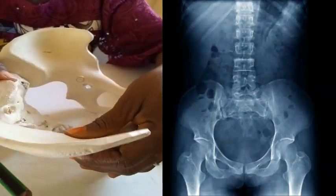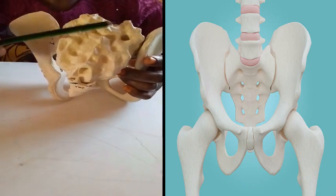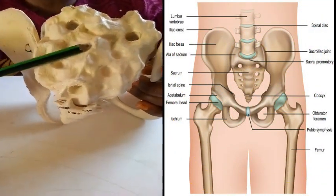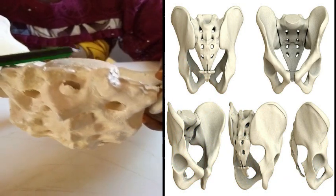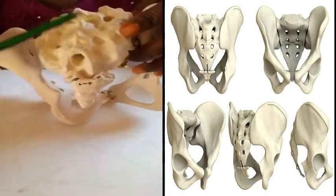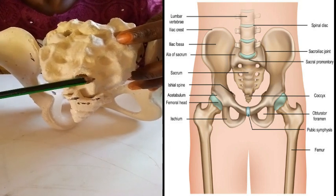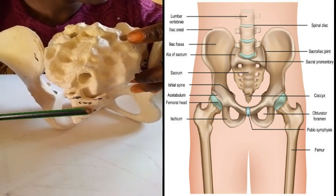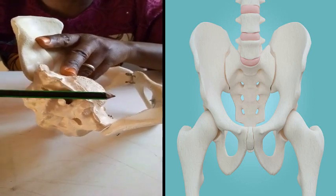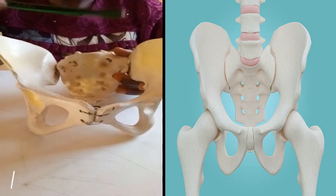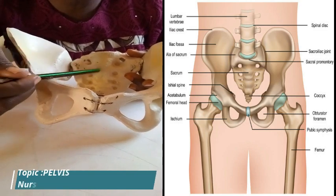The sacrum is a wedge-shaped bone consisting of five fused vertebrae, and it forms the posterior wall of the pelvic cavity. It is made up of two parts: the base, which is the superior aspect, and the apex, which is the lower aspect of the sacrum. The apex articulates with the coccyx, and the upper border of the first sacral vertebrae articulates with the first lumbar vertebrae. The anterior surface of the sacrum is a concave portion known as the hollow of the sacrum.